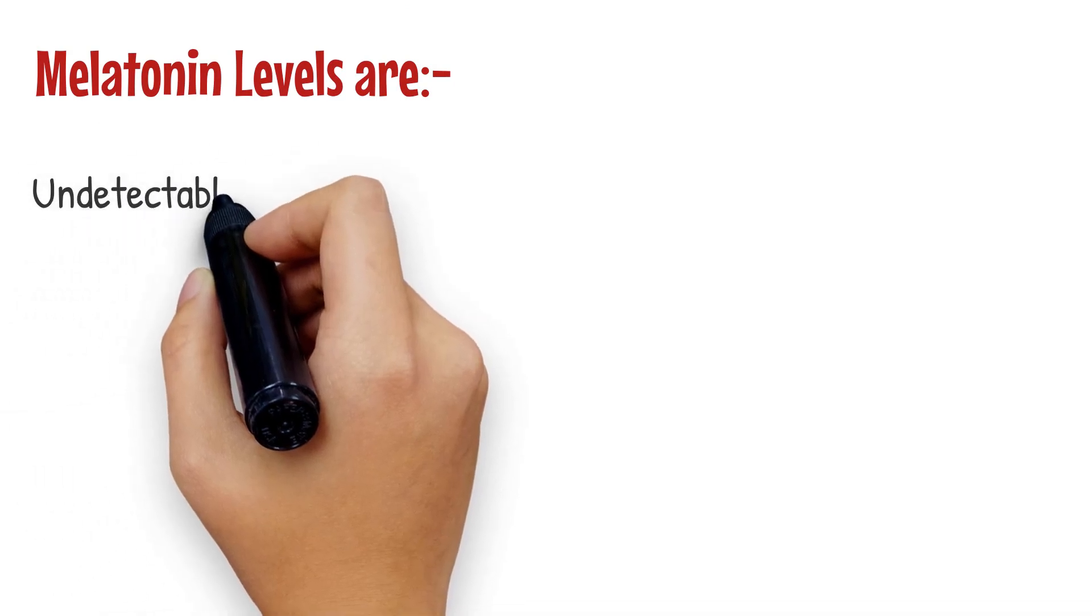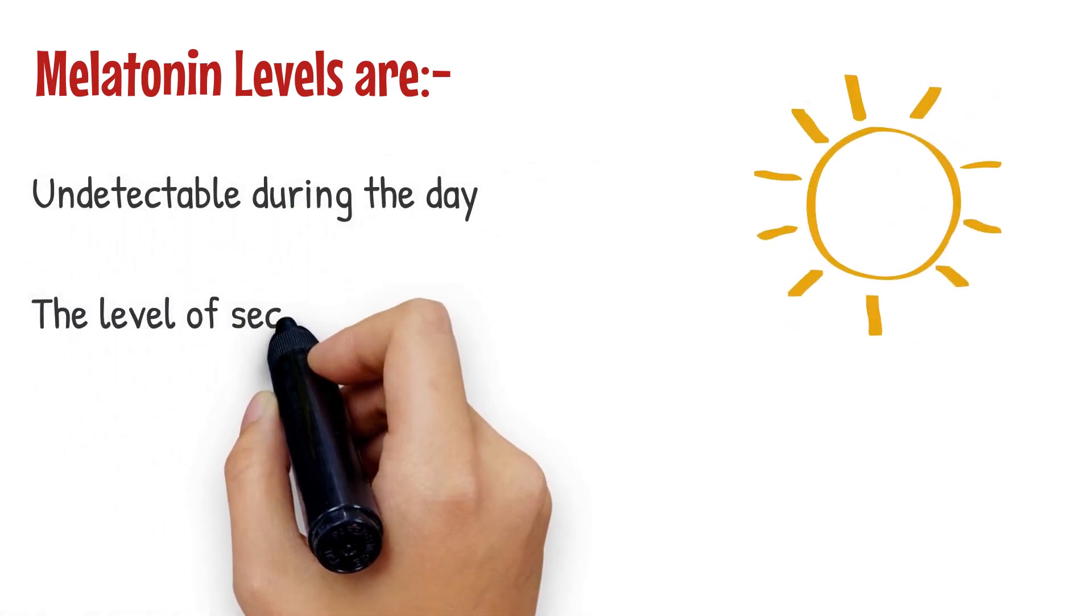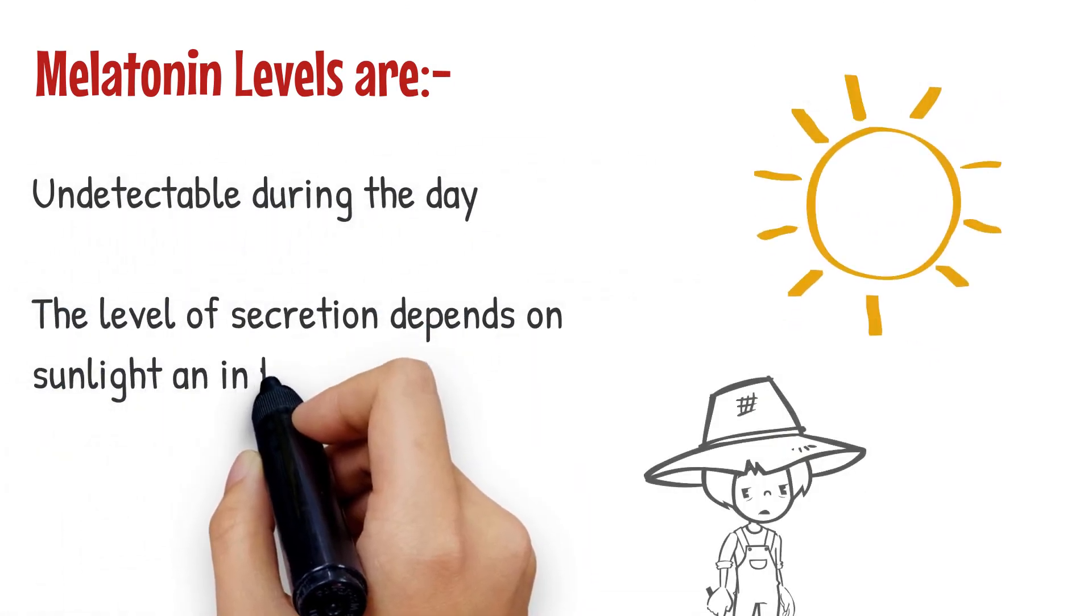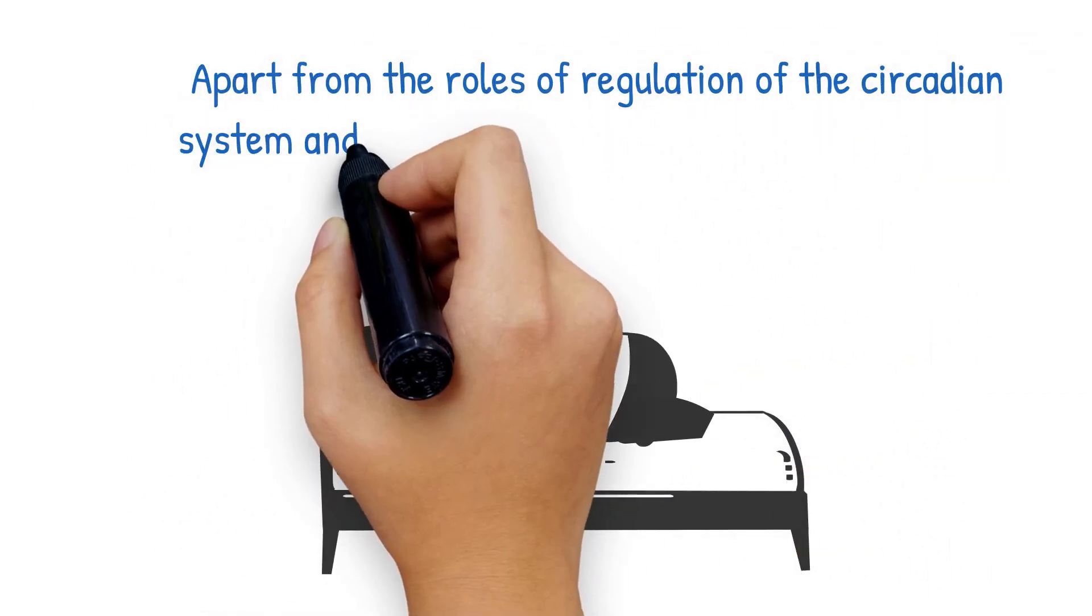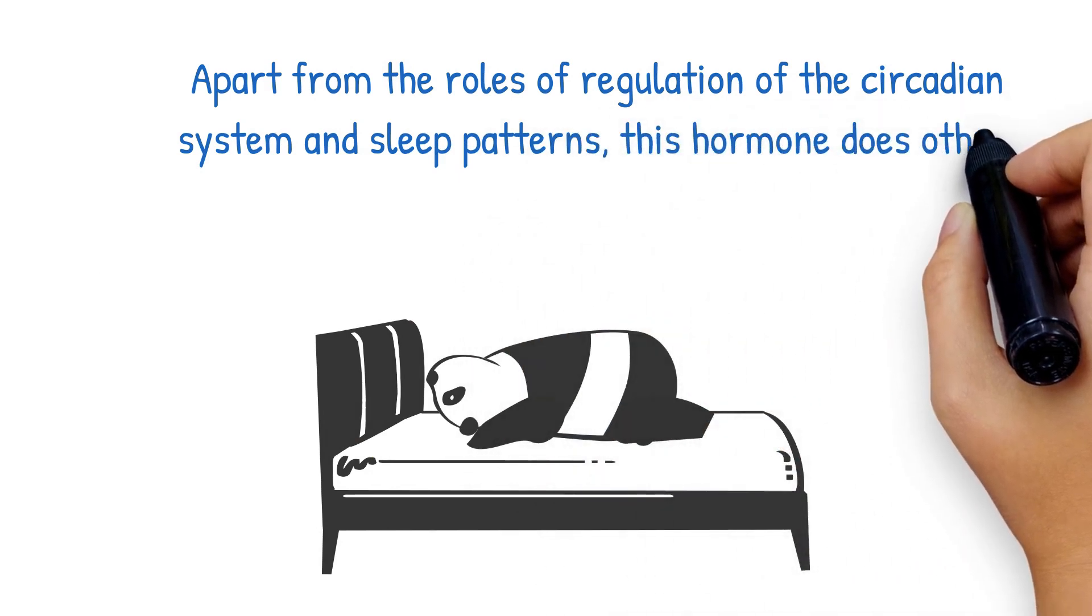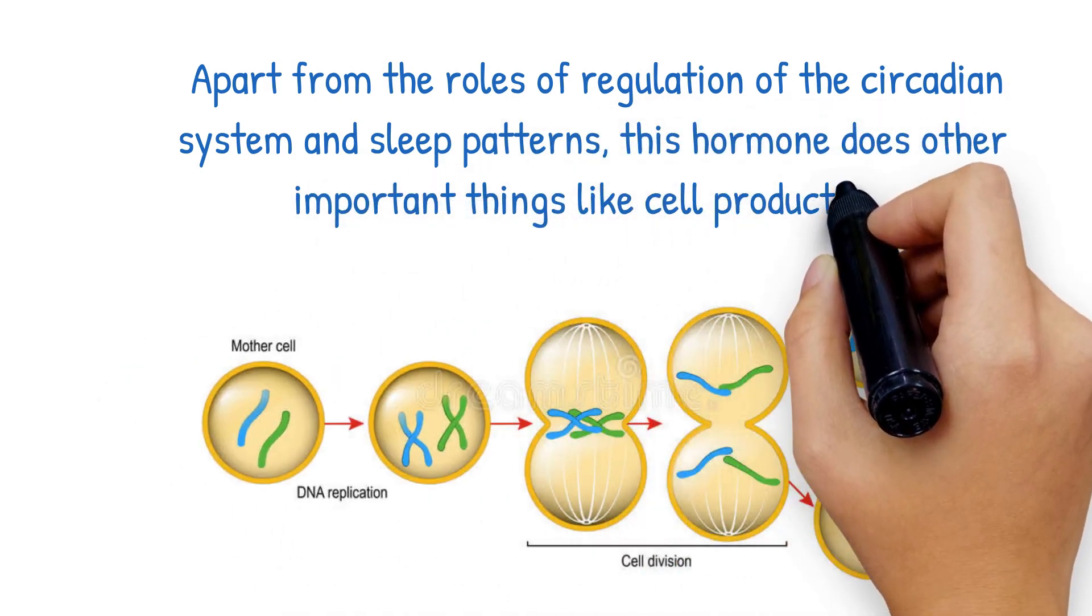Melatonin levels are undetectable during the day and the level of secretion depends on the amount of sunlight an individual is exposed to. Apart from the roles of regulation of the circadian system and sleep patterns, this hormone does other important things like cell production, neuroprotection, etc.